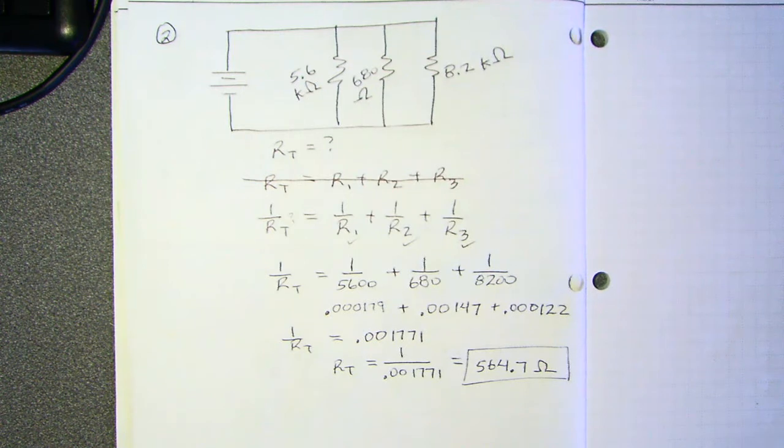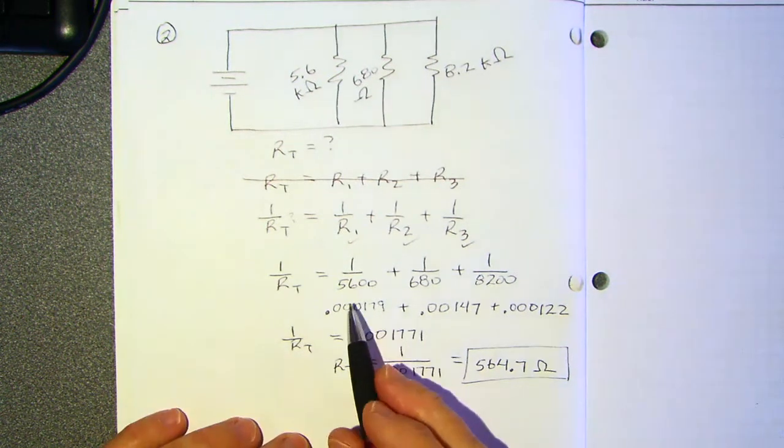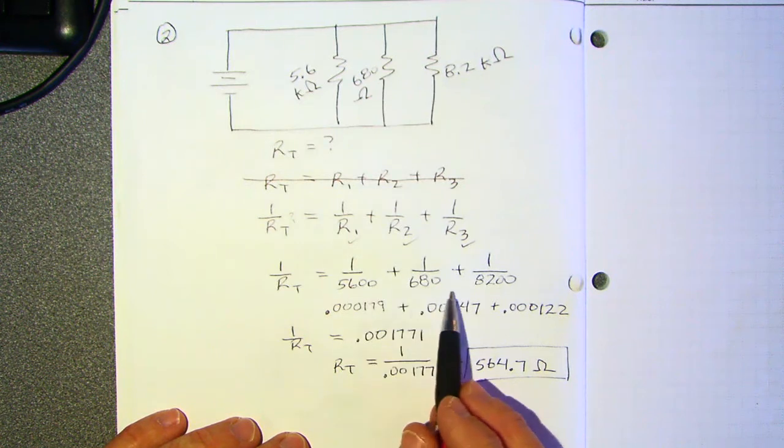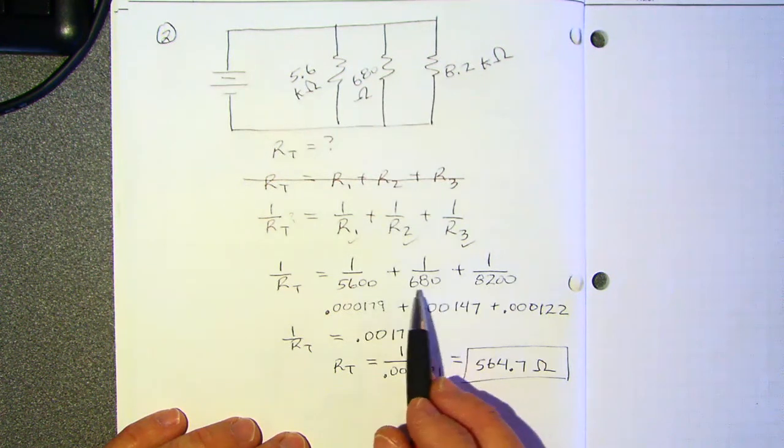Actually, she figured out how her calculator can make this a lot easier, and I can take it a step further. I wasn't sure if you guys were ready for this calculator tip, but I think since you're asking or thinking about it - when you have this 5600, 680, and 8200, they're all in the denominator.